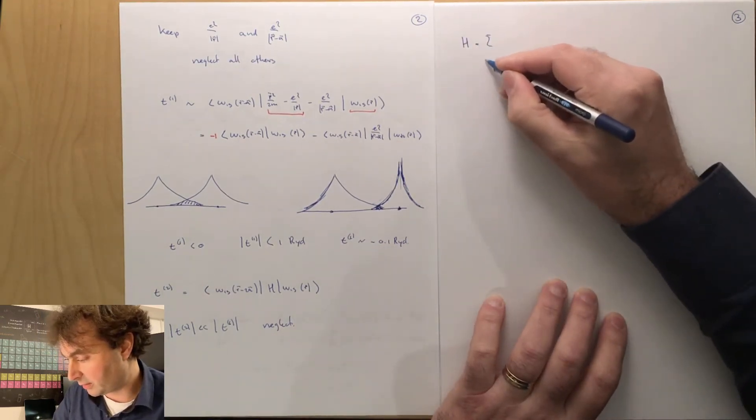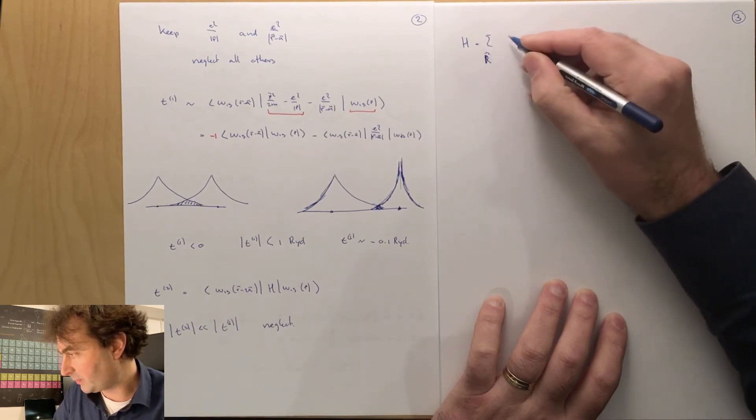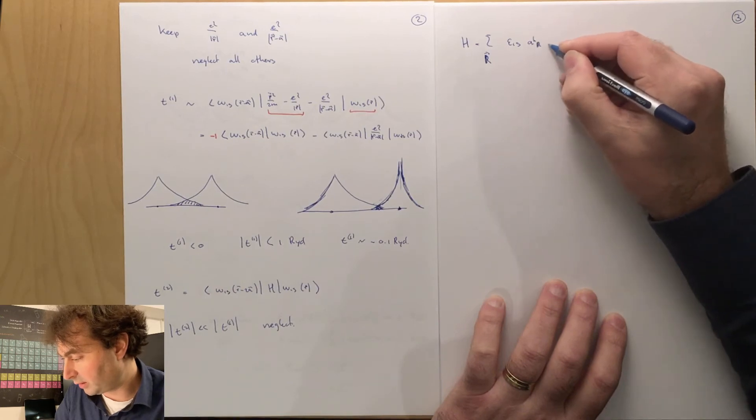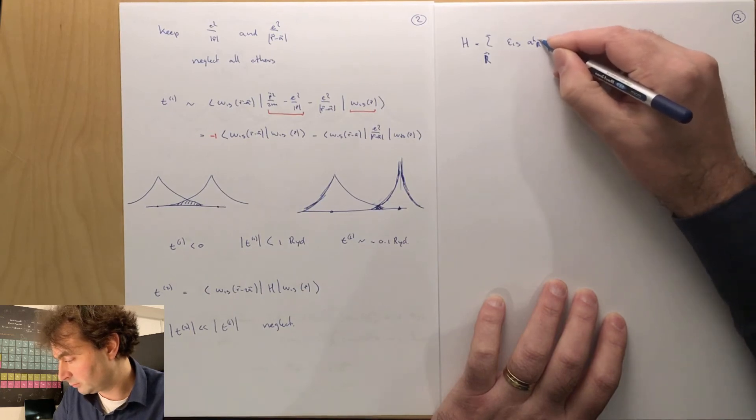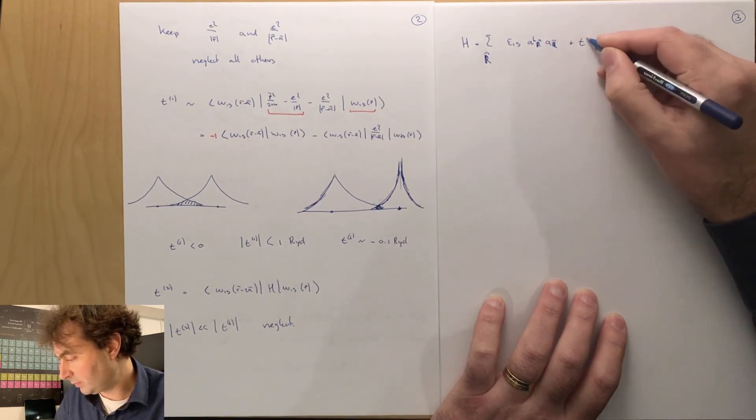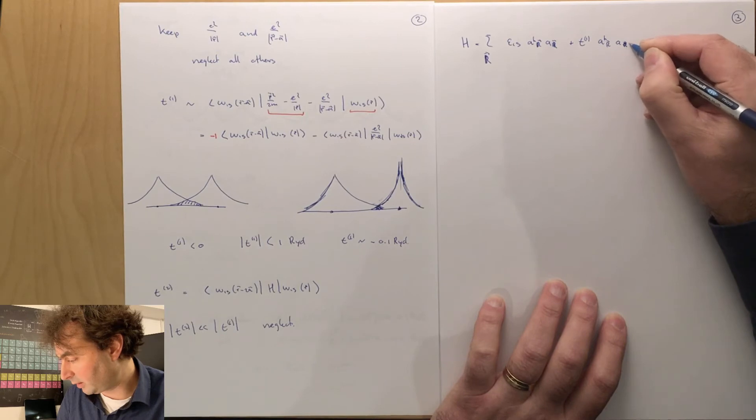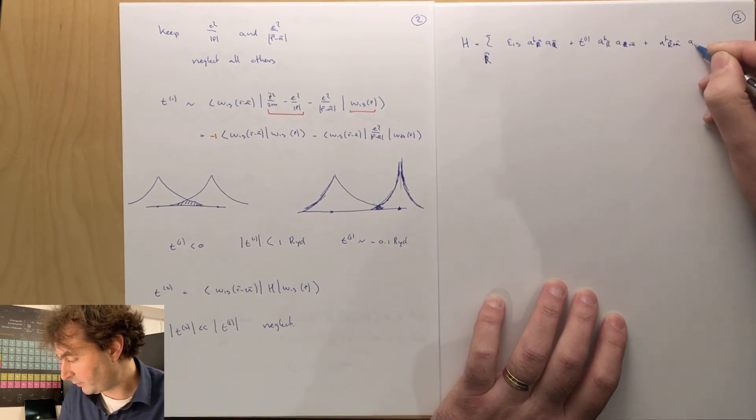The Hamiltonian is then going to be a sum over all lattice sites, epsilon 1s, a dagger R, a R, plus T1, a dagger R, a R plus A, plus a dagger R plus A, a R.